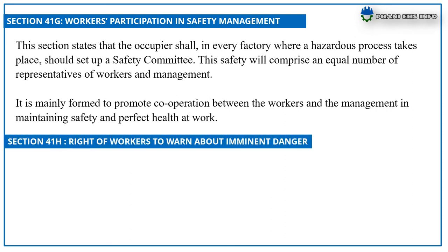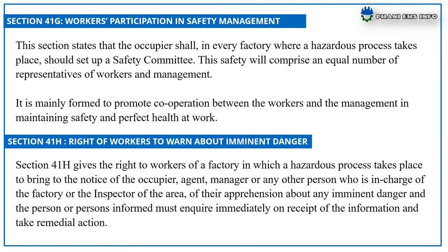Section 41H: Right of Workers to Warn about Imminent Danger. Section 41H gives the right to workers of a factory in which a hazardous process takes place to bring to the notice of the occupier, agent, manager, or any other person in charge of the factory, or the inspector of the area, any apprehension about imminent danger. The person or persons informed must inquire immediately on receipt of such information and take remedial action.